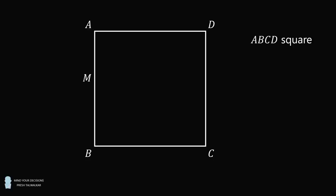Construct the point M on side AB, the point N on side BC. Then construct AN, DM, DN, and CM.